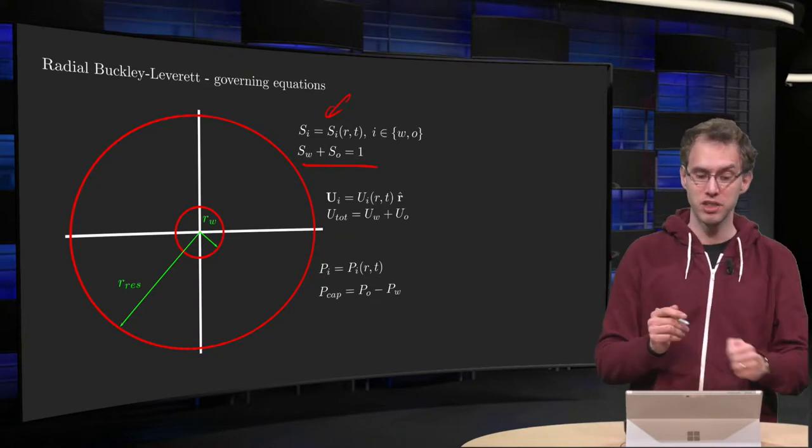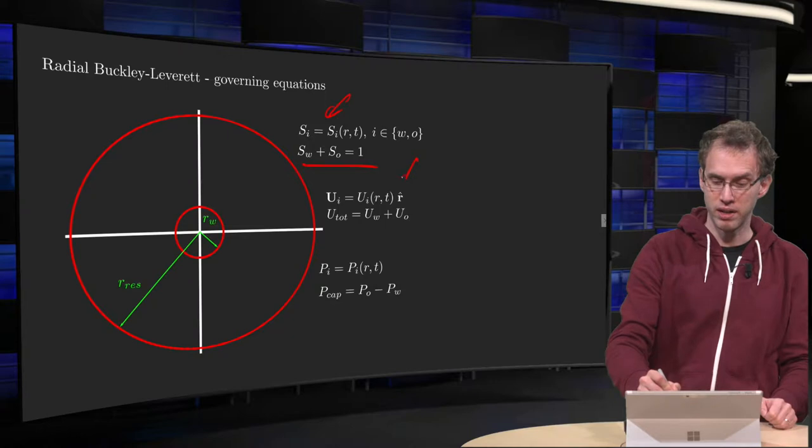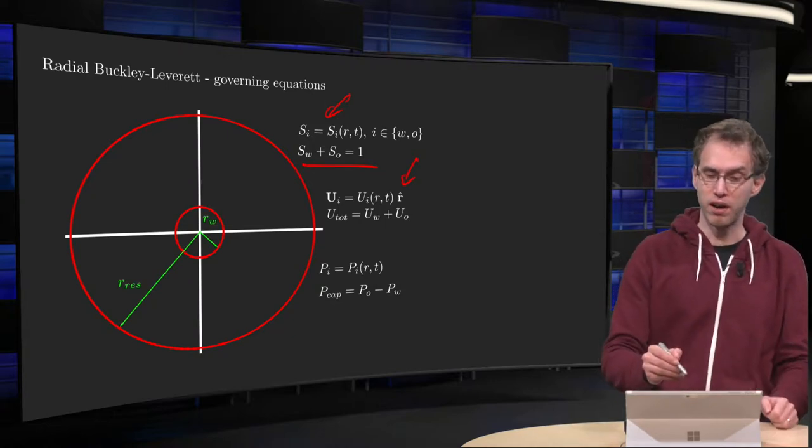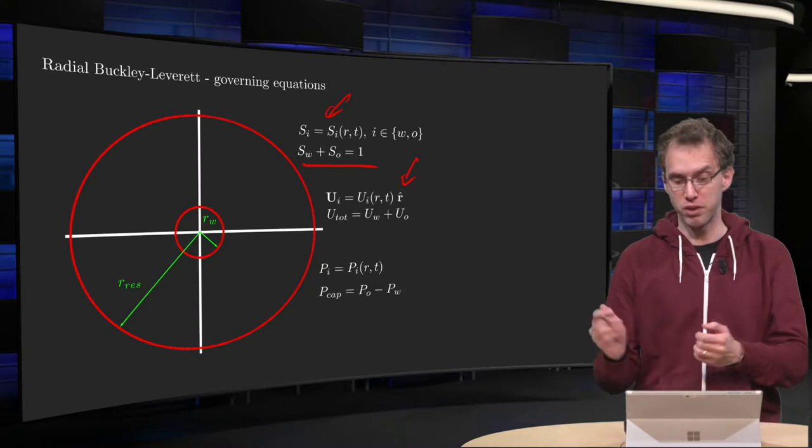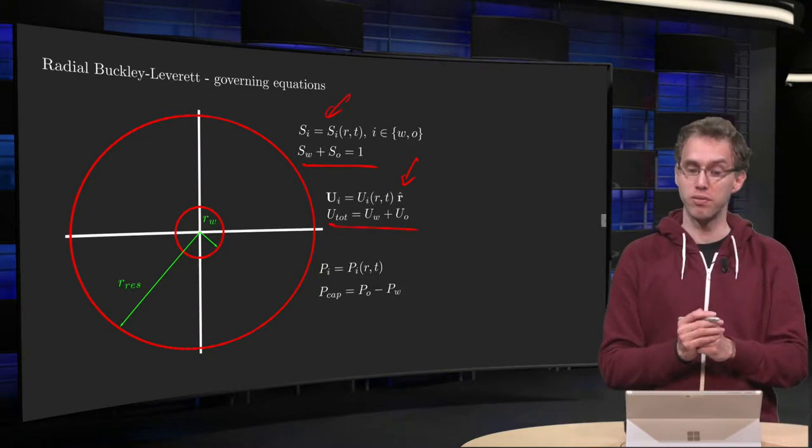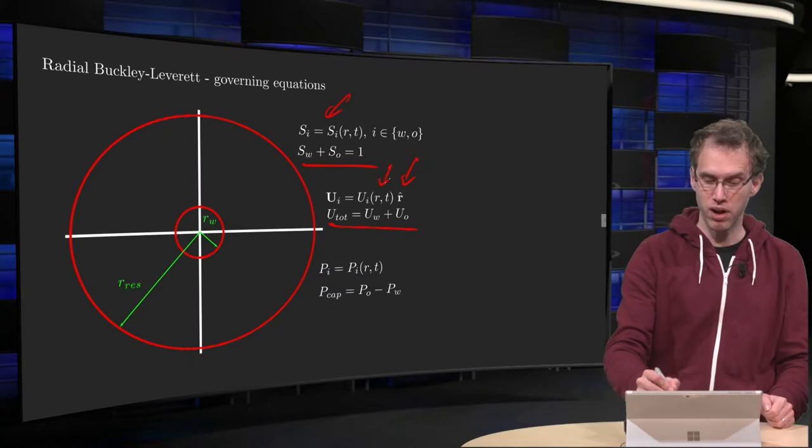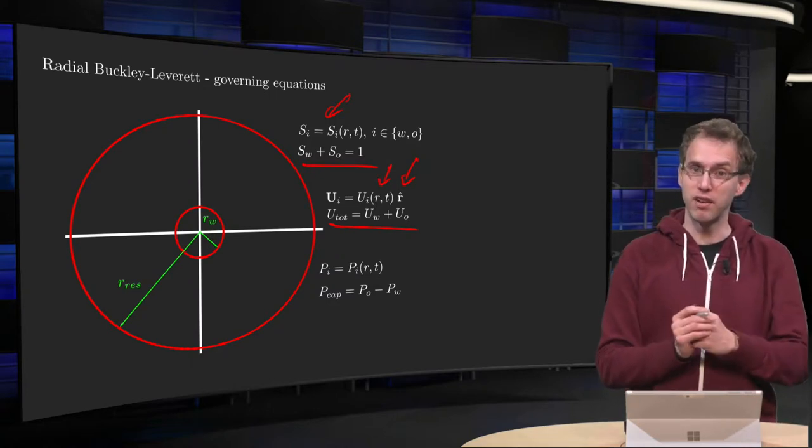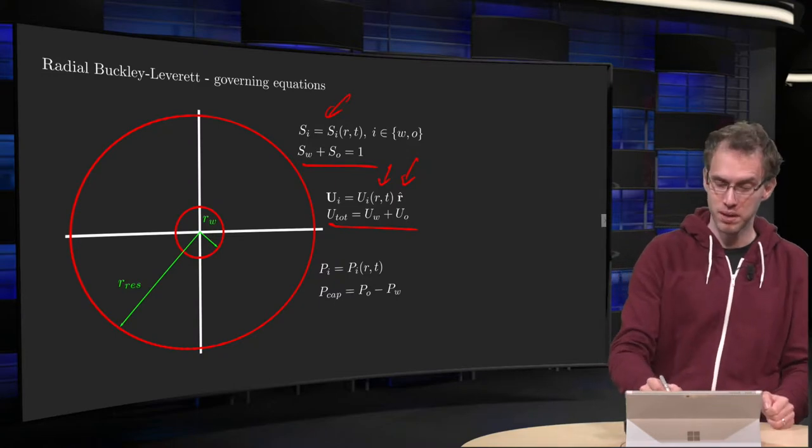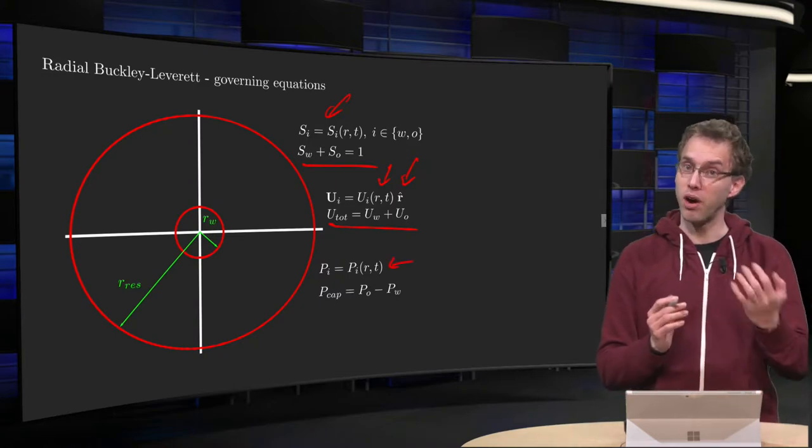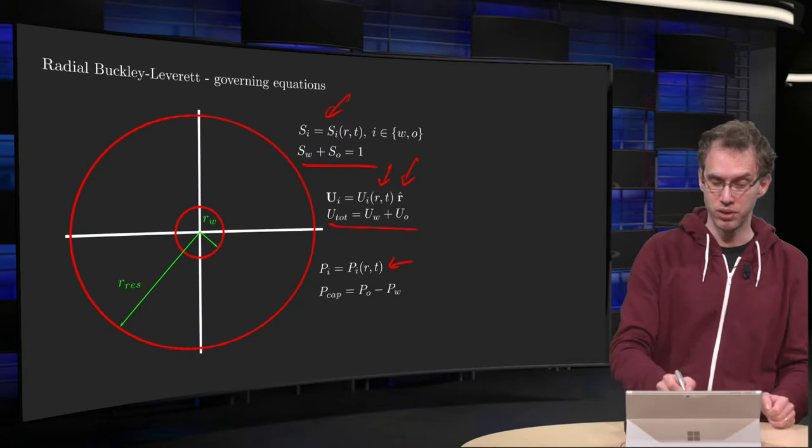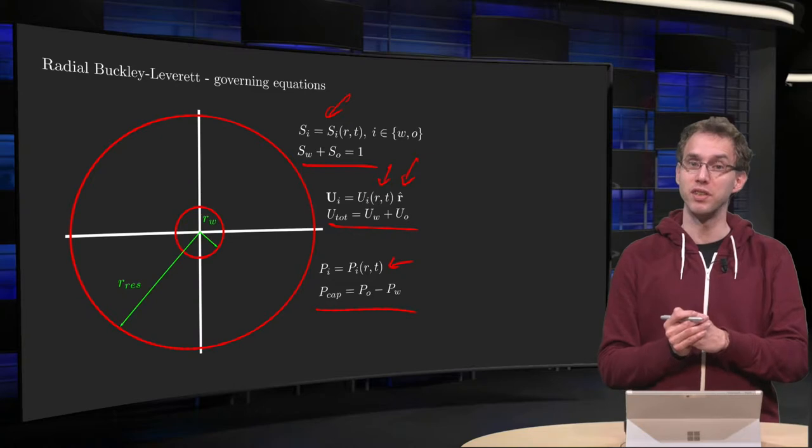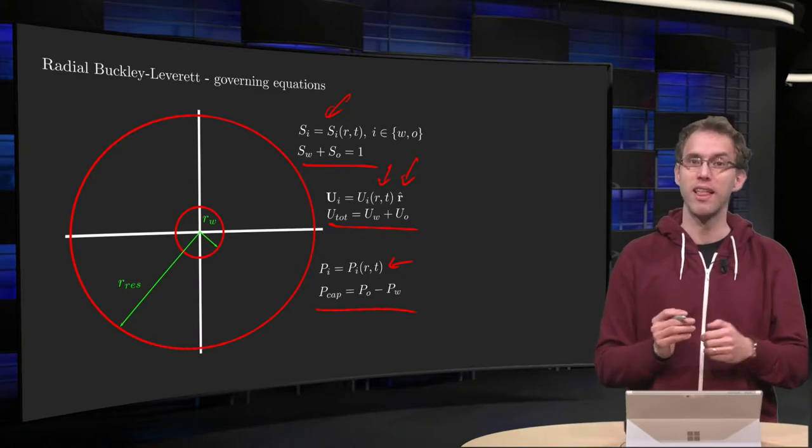What about the velocities? The velocities are purely in the r-hat direction, so we have two velocities, water velocity and oil velocity, we call the sum the total velocity, and both depend on r and t. And then finally, we have some pressures p, also depending on r and t, and as usual the capillary pressure, the difference between non-wetting and wetting pressure, which is p oil minus p water.